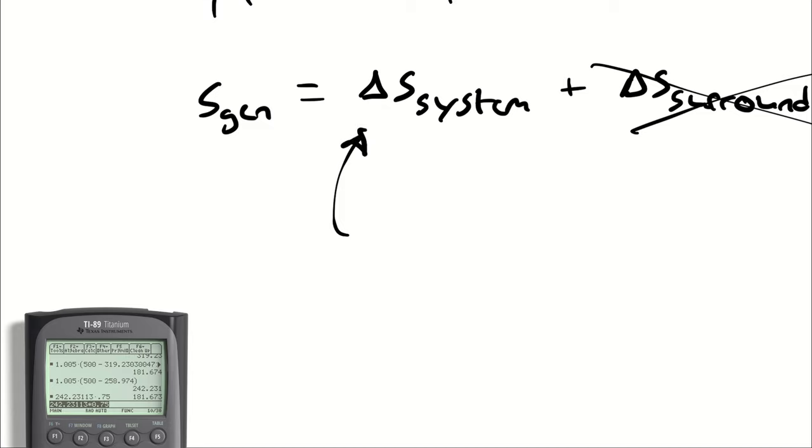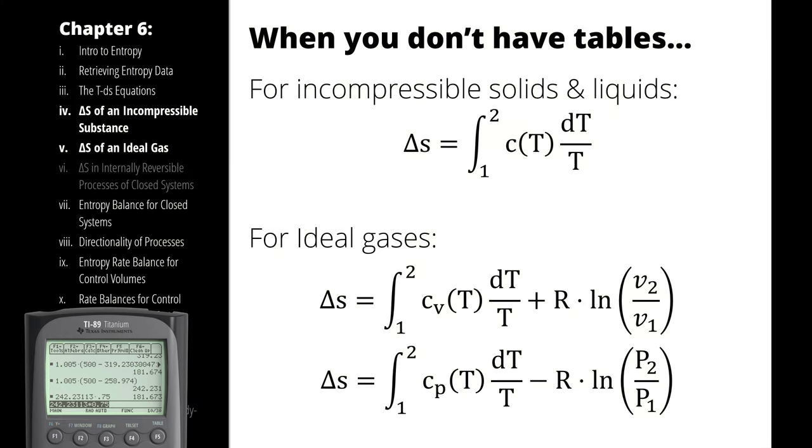Now, how do we determine delta S of the system? Well, if I had water or R134A in this problem, I can look up S1 and S2 and subtract them. If I had an isothermal process, I can use the definition of entropy to figure out heat transfer divided by temperature, but I don't. I have an ideal gas, which means that we don't have tables that will give us entropy. Do you remember what we do when we don't have tables? We use these equations.